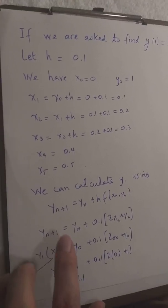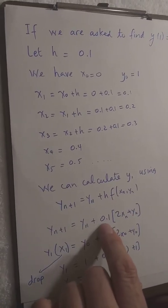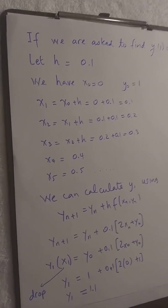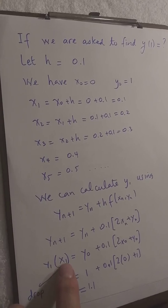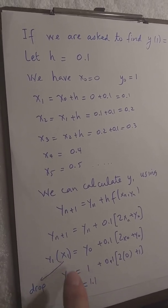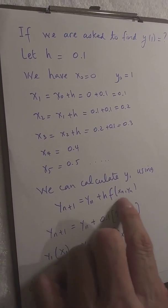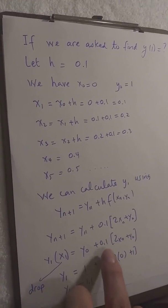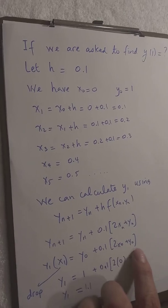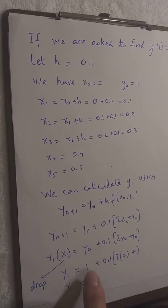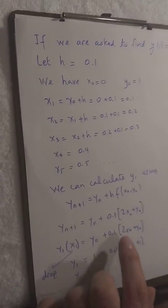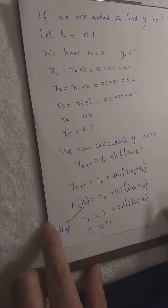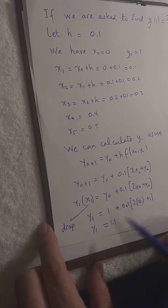So yn+1 equals yn plus h, which we pick to be 0.1, times f of xy, which is 2x plus y. We want y1: y1 equals y0 plus h·f of x0, y0. So y1 is y0, which was 1, plus 0.1 times 2 times 0 plus 1, because x0 was 0 and y0 was 1. When we calculate this, we end up with y1 equals 1.1.